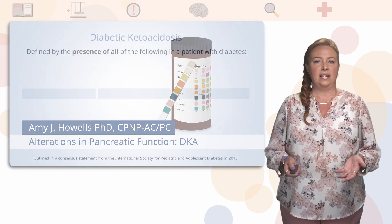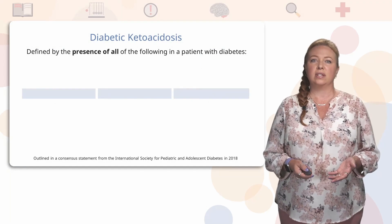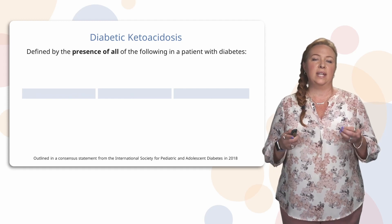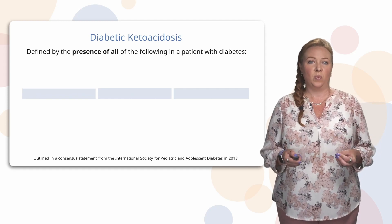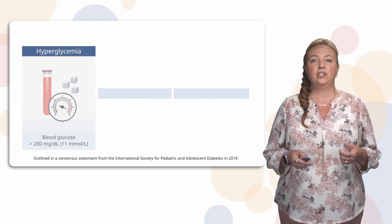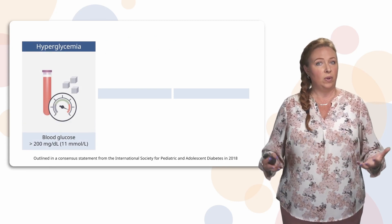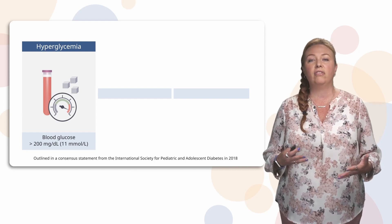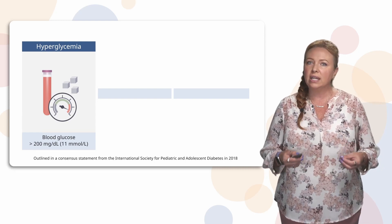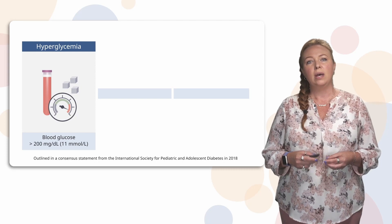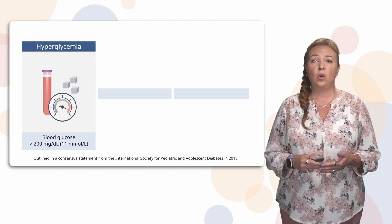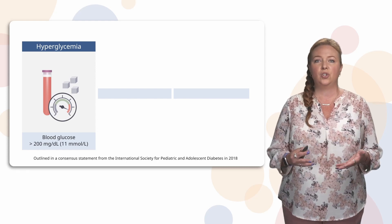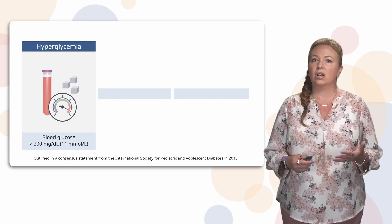So what is diabetic ketoacidosis? It is defined by the presence of all of the following in a patient with diabetes. The patient has hyperglycemia. Normally we would hope that a diabetic patient keeps control of their insulin management and keeps their blood sugar in a good range. But sometimes that blood sugar gets out of control — it gets too high — and generally if it's greater than 200, it's going to start to cause some problems.